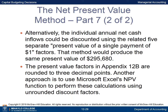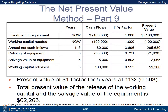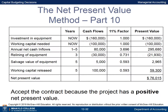The present value factors in Appendix 12B are rounded to three decimal points. Another approach is to use Microsoft Excel's NPV function with unrounded discount factors. The present value factor of $1 for three years at 11% is 0.731; therefore, the present value of the $30,000 relining cost is $21,930. The present value factor for five years at 11% is 0.593; so the present value of the $5,000 salvage value is $2,965. The total present value of the working capital release and salvage value is $62,265. The net present value of the investment opportunity is $76,015.